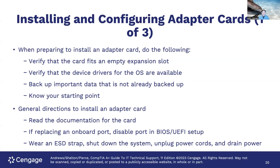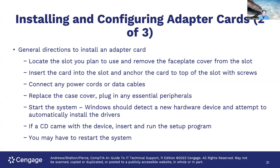General directions to install an adapter card: wear an electrostatic strap, shut down the computer, unplug the power cords and drain the power. Locate the slot, remove the faceplate cover, insert the card, and anchor it with screws. Connect any power cords or data cables — especially extra power connectors for video cards. Replace the case cover, plug in essential peripherals, and start the system. Windows should detect the new hardware and attempt to automatically install drivers. If a setup program is included, run it. You may need to restart the system afterward.